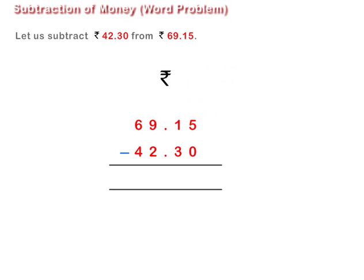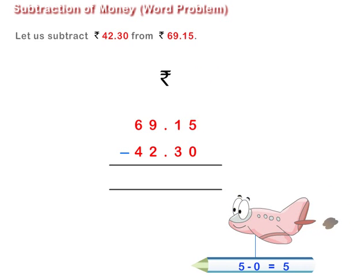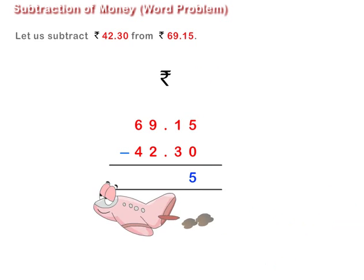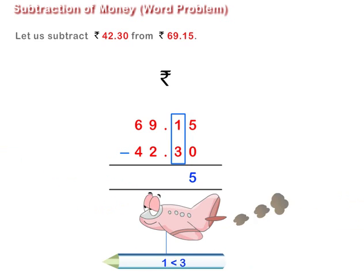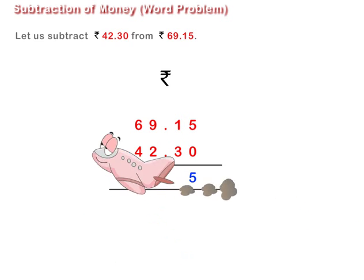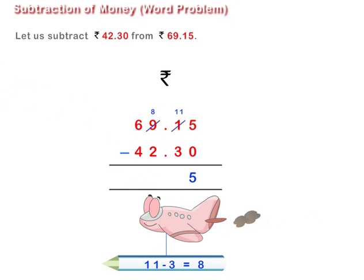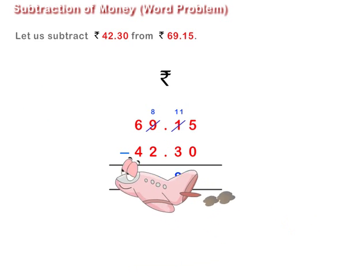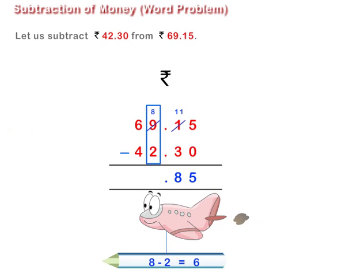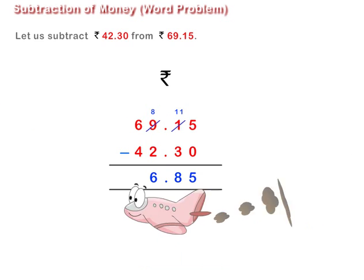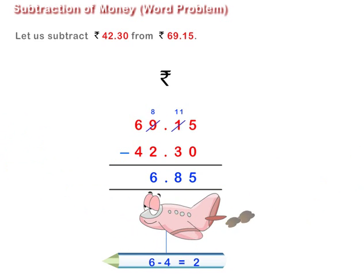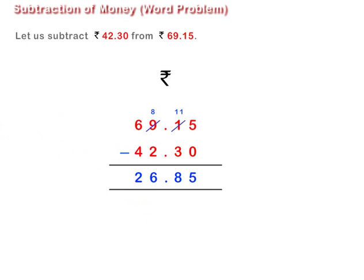Arrange the numbers in columns. Subtract Paise from Paise and Rupees from Rupees. Decompose the numbers if needed. On subtracting Rs. 42.30 from Rs. 69.15, we get Rs. 26.85.